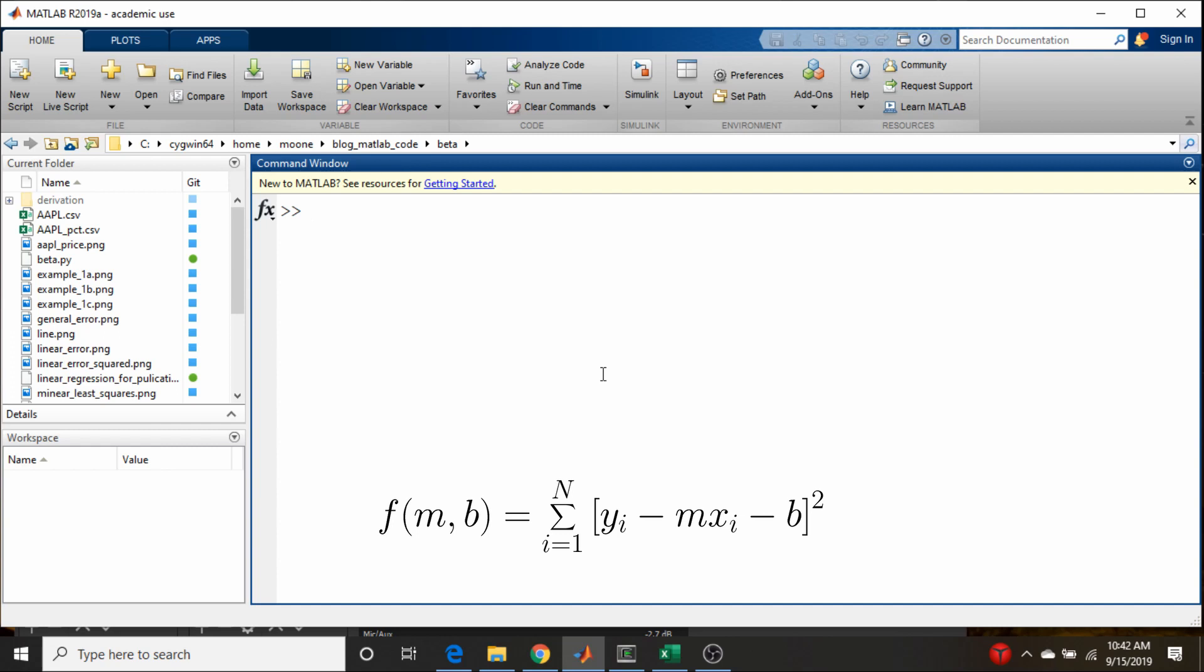Here's the actual equation. It's a function of m and b, and this whole thing gets squared. So this is some sort of parabolic, bowl-shaped function. So that's what we would expect to see.